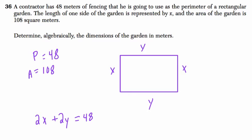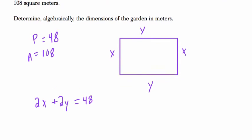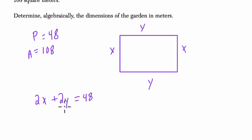So 2x plus 2y is the perimeter, and that equals 48. And we know the area is 108, and they want us to figure this out. So we've got to get rid of one of these variables, or at least rewrite this thing so it's more manageable. So I'm going to isolate y.